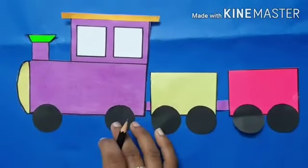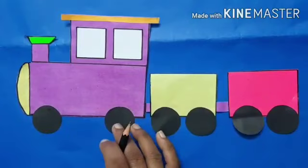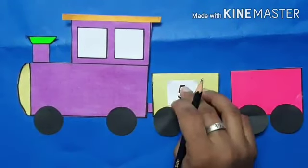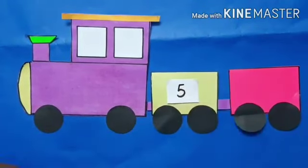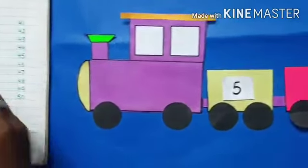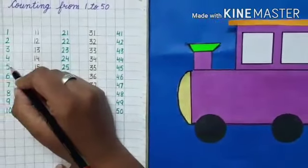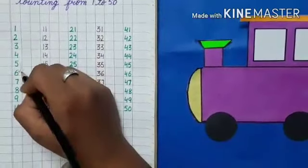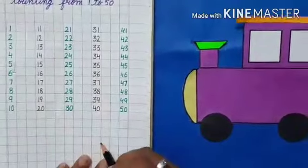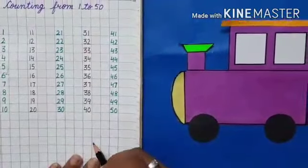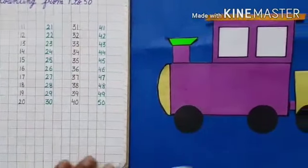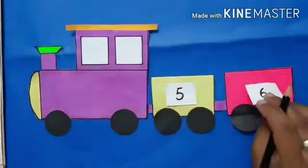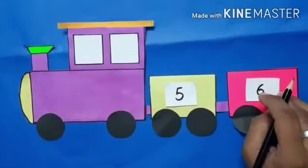Look here, my lovely students. Here we have number 5. Can you find which number comes after 5? Yes, it is 6 — that comes after 5. So here we will write 6.